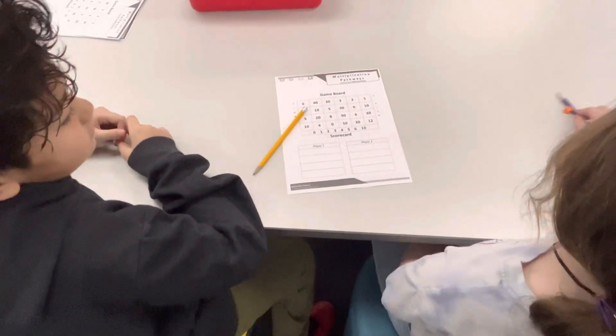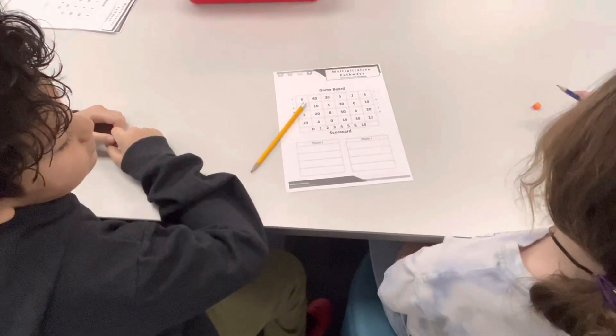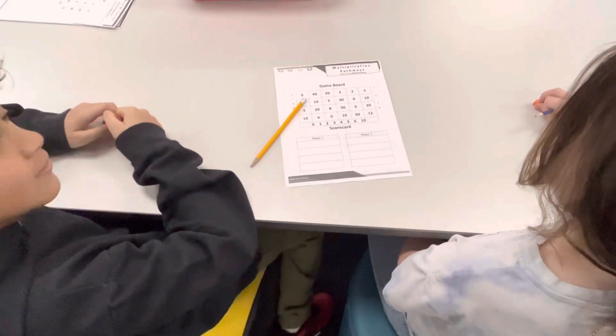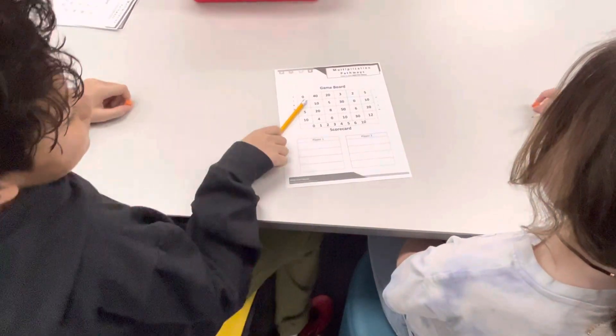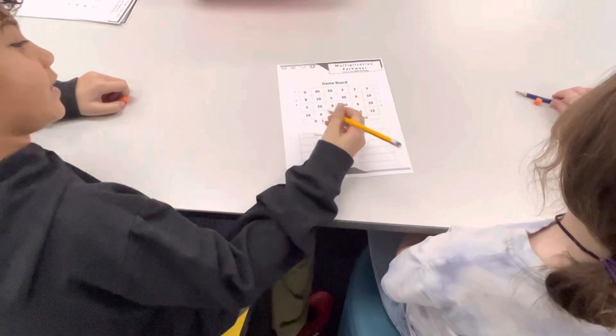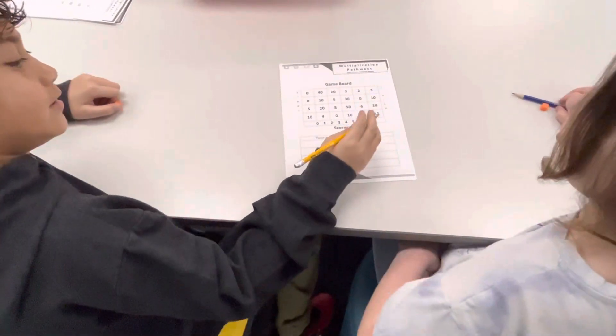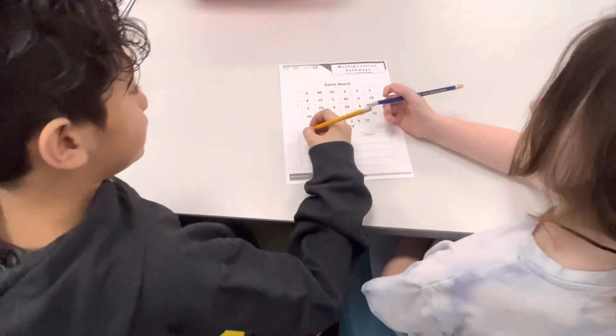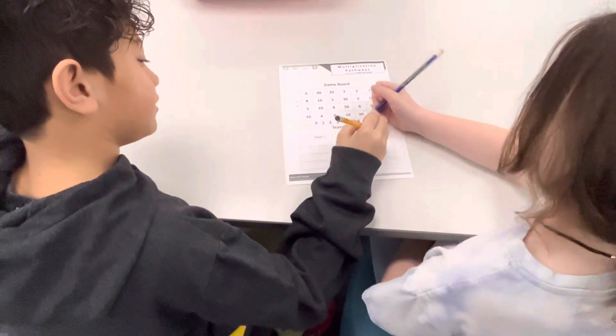All right, tell me, what do you do first in this game, Multiplication Pathways? Nathaniel? First, you write your name on player one and player two.